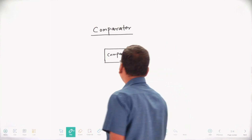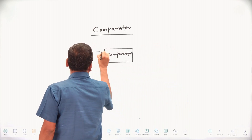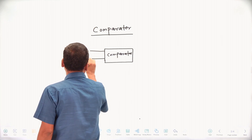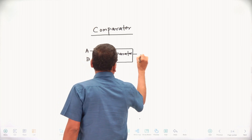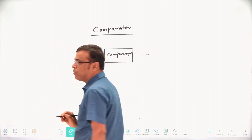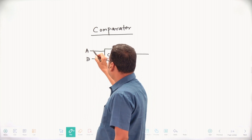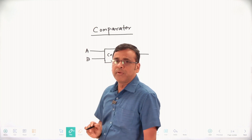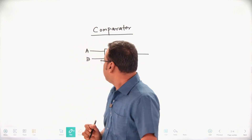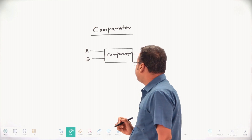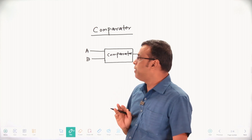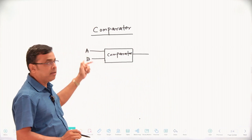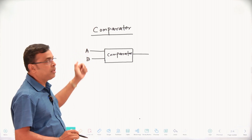So what does it mean? In a single-bit comparator, suppose that is your A and this is your B — this is your input and this is your output. In case of a single-bit comparator, there are three possible outcomes: it may be A greater than B, A less than B, or A equal to B.